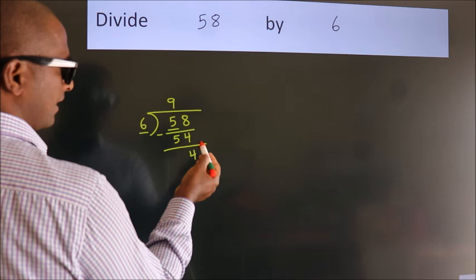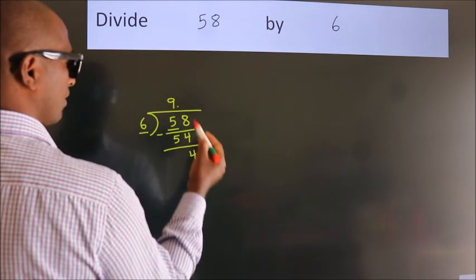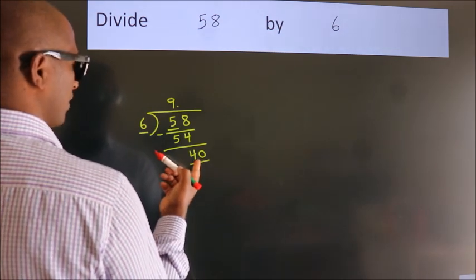no more numbers to bring down, so what we do is put a dot, take 0. So 40. A number close to 40